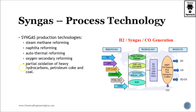We have several ways to achieve syngas: steam methane reforming — as the name implies, using steam and methane — naphtha reforming, autothermal reforming, oxygen reforming, and partial oxidation. Depending on the feedstock, you're going to be using several technologies, and depending on the specific technology you will be producing hydrogen gas and carbon monoxide, which is the main point of syngas. Sometimes you get CO₂, leftover methane, and vapor.